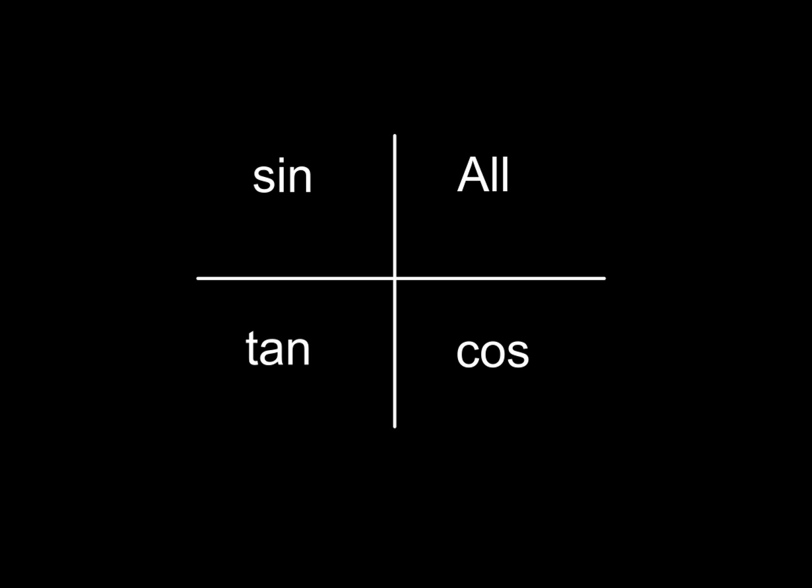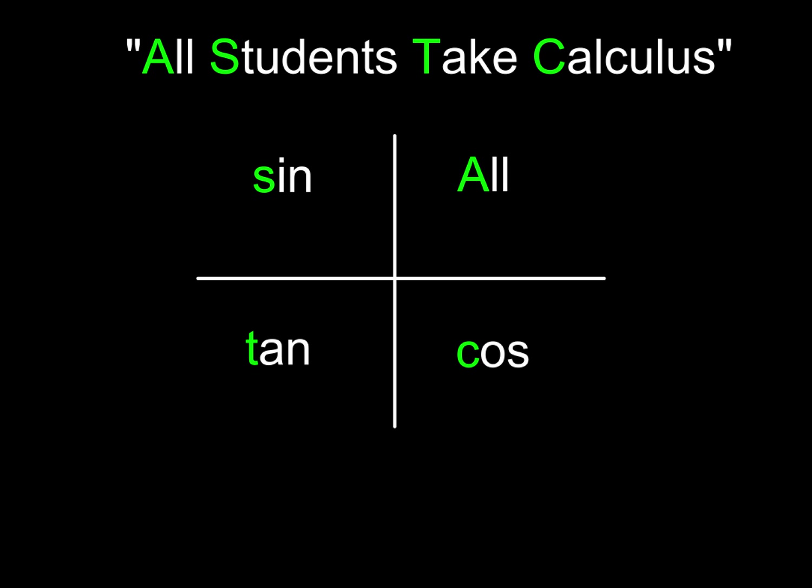Now how do you memorize this? Well, that's something else you'll see a lot of math teachers talk about. And they'll use this kind of mnemonic: All students take calculus, seems to be a real popular one. The A for all stands for all, so that's quadrant one. The S in students stands for sine in quadrant two. And the T for take stands for tangent, which is in quadrant three. And C for calculus represents the C in cosine.